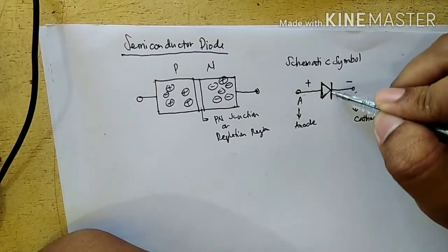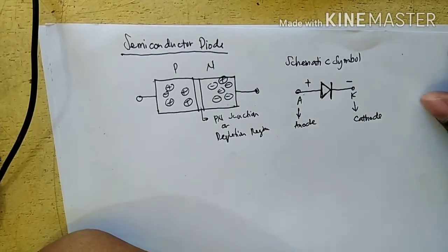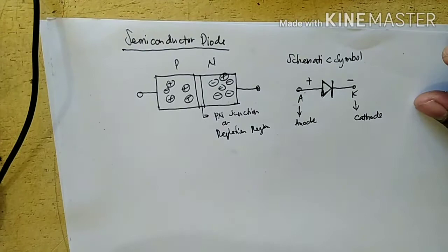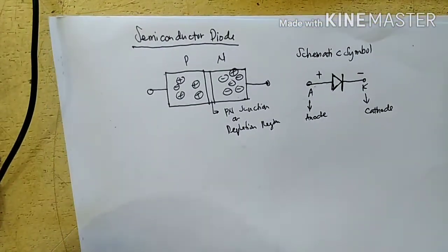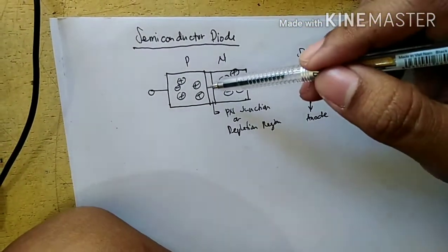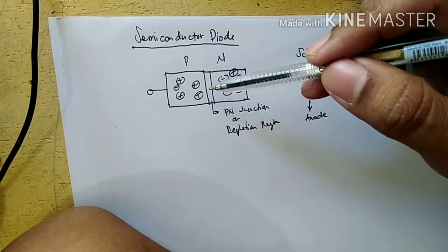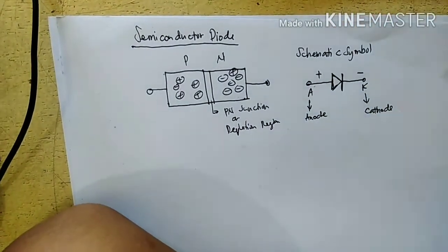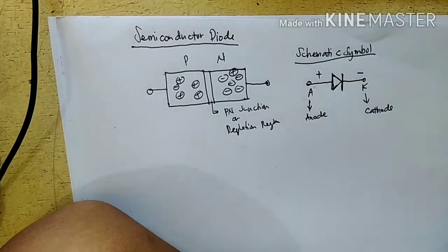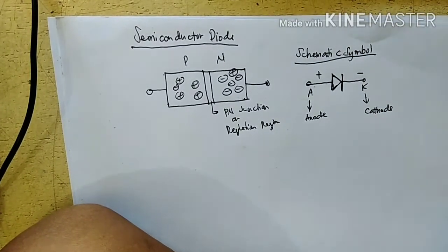This line is negative charge. So this is the semiconductor and this is the schematic symbol. Semiconductor diode.